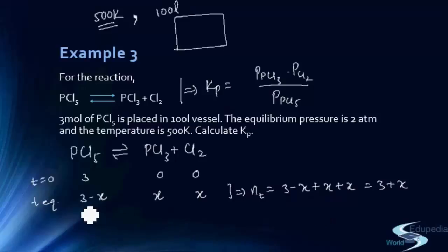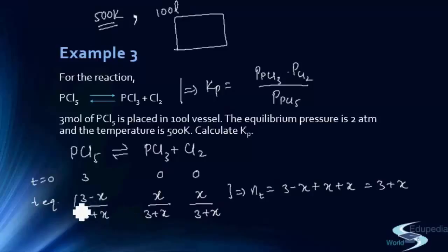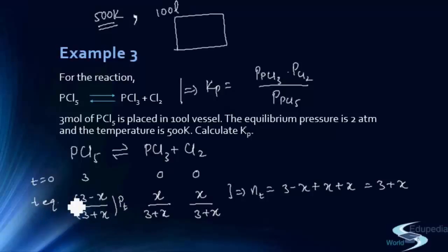At equilibrium, the mole fraction of PCl5 is (3−x)/(3+x), mole fraction of PCl3 is x/(3+x), and mole fraction of Cl2 is x/(3+x). Multiplying these mole fractions by the total pressure Pt at equilibrium gives the individual partial pressures.